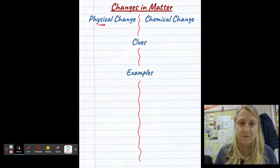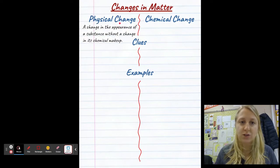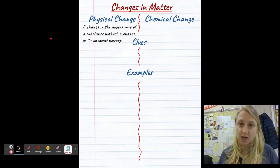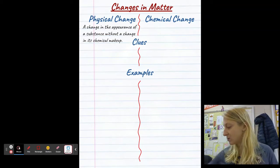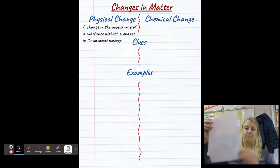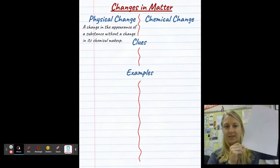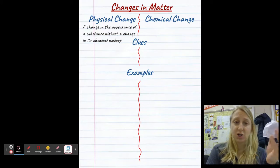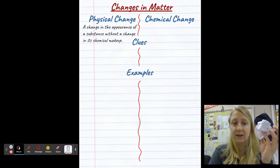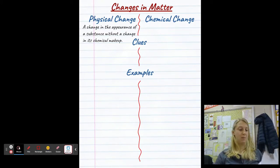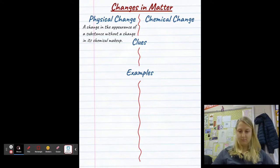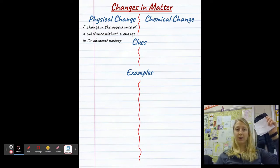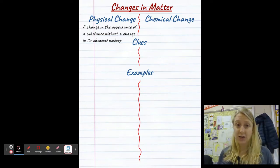So first off, let's get our definition of physical change. We're going to start with physical change. Our definition of a physical change is a change in the appearance of a substance without a change in its chemical makeup. So a common example that I usually like to use is if I take a piece of paper, looks like a white rectangle right now, I can crumple this paper up and it's still a piece of paper. I haven't changed what it's made of. It's still the same substance. I've just changed the way it looks. I can do the same thing by if I folded it, I change the way it looks. Maybe I tear it in half, I change the way it looked. But it is all just physically changing the paper, right?